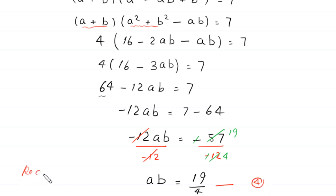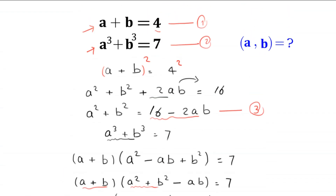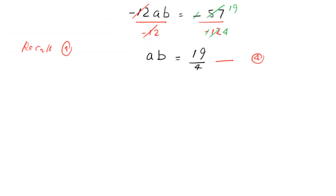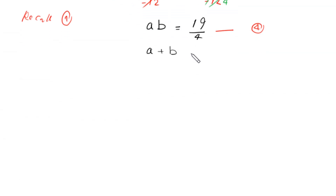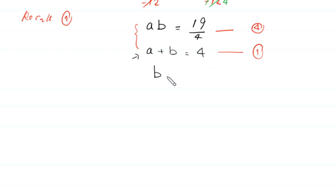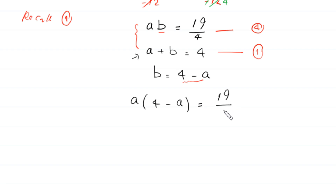Now we recall equation 1, which is a plus b is equal to 4, giving us a system of two equations. From equation 1, we move a to the right hand side, so b is equal to 4 minus a. We substitute this into equation 4, which becomes a times (4 minus a) is equal to 19 over 4.